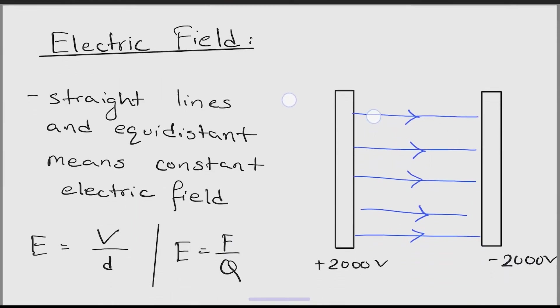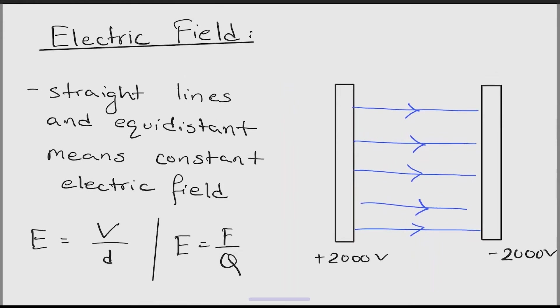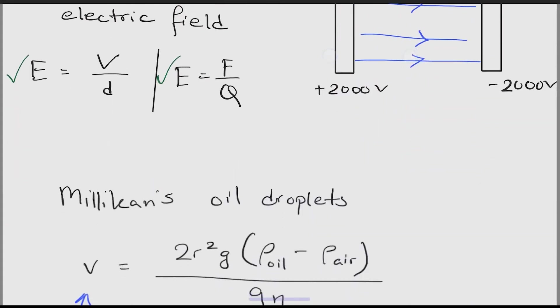Moving on, the next topic is the electric field. Electric fields can form between two charged particles or metal plates. Here we have used A and B, two metal plates. We can see that the blue lines are equidistant from each other. That means the electric field is constant. As equidistant lines give constant electric fields. Here are two formulas for electric field.